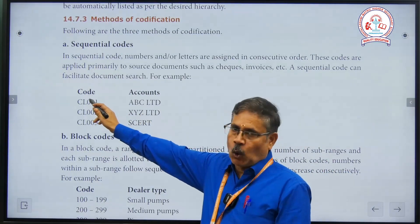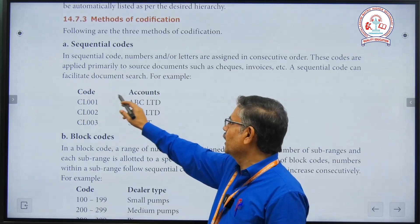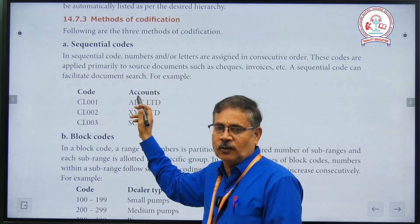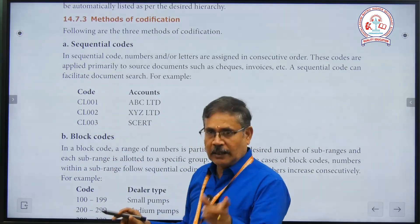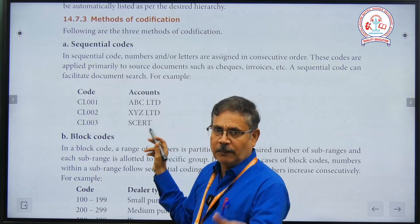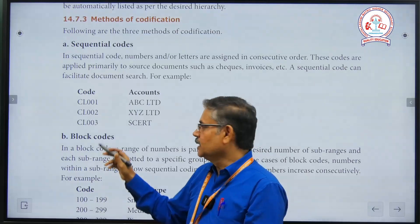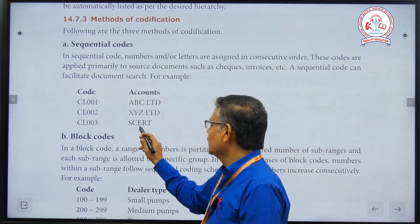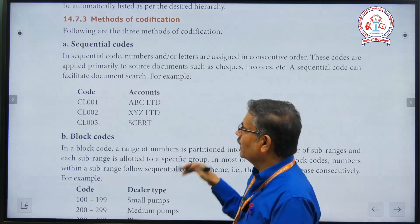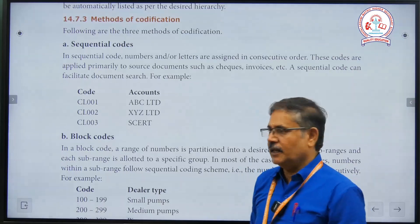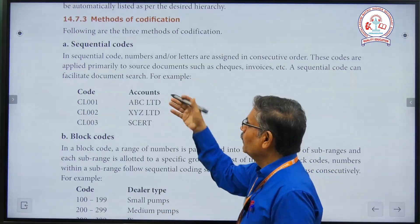For sequential code, we use letters together with numbers. For example: code CL with number 001 represents ABC Company Limited account; CL 002 represents XYZ Company Limited account; CL 003 represents another company account. In this way, we use a letter prefix followed by a sequential number — this is the sequential code.